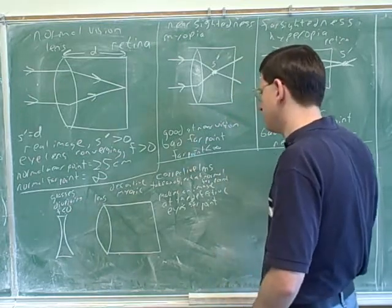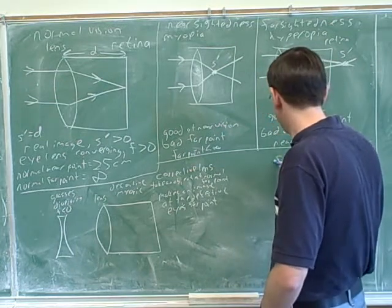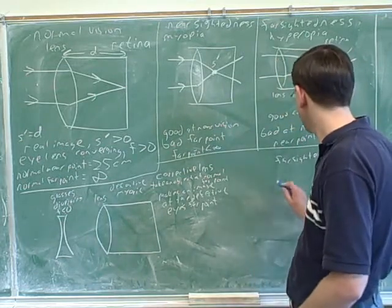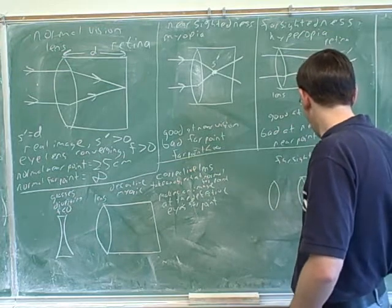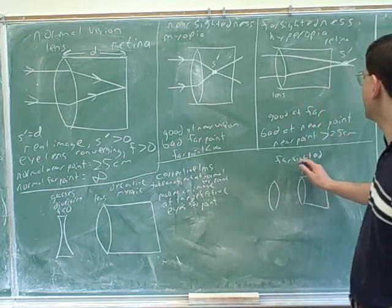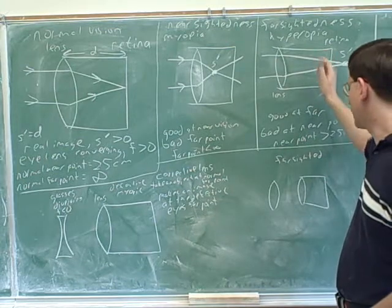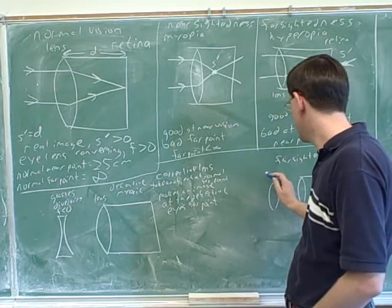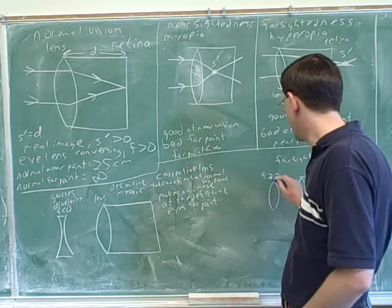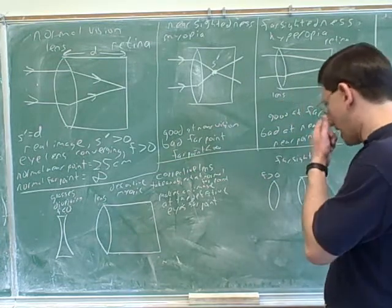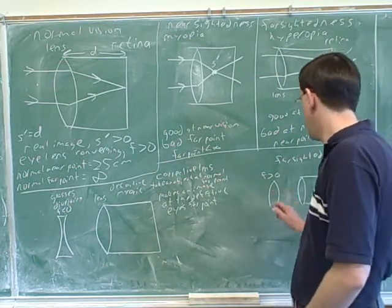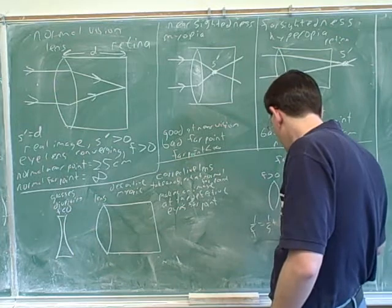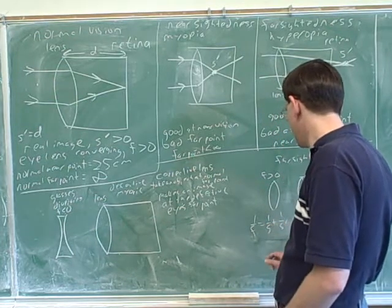On the other hand, suppose you have somebody who is farsighted. What type of glasses do they need — converging or diverging? Converging. They need converging lenses because the farsighted person is not converging enough. Their rays are not converging enough, so they need more convergence. So what does that tell you about the sign for their glasses? F is greater than zero. Now, when you're working through the lens equation for the corrective lens, where are you going to put the object and where do you want the image?